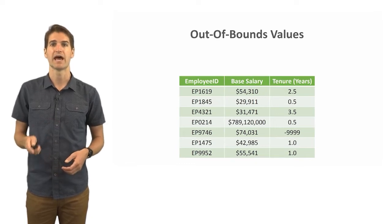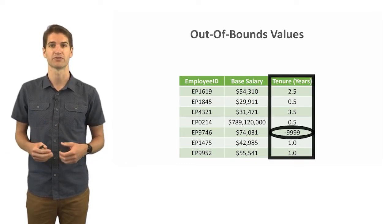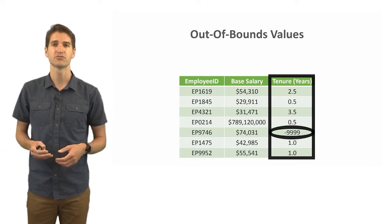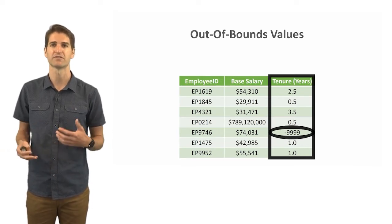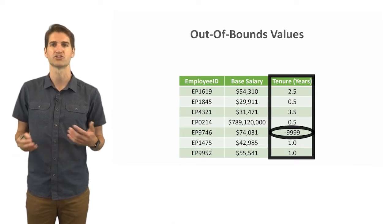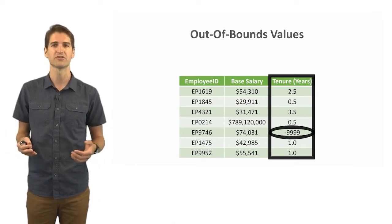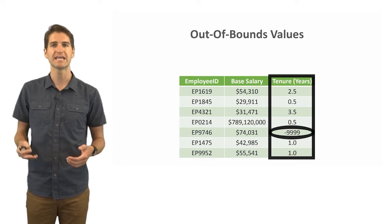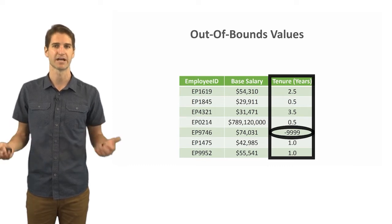Now let's take a look at the tenure variable here, tenure in years. Notice we have pretty standard values for tenure in years: two and a half years, half a year of employment, three and a half years and so forth. But notice we have one value that is circled here that is negative 9,999.